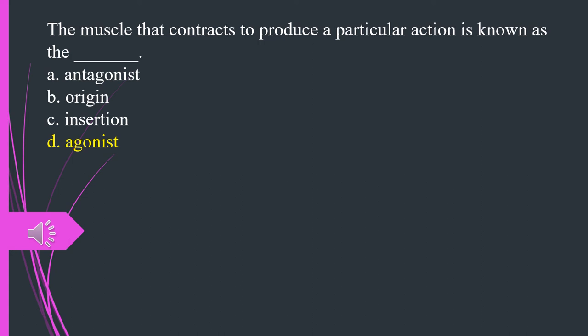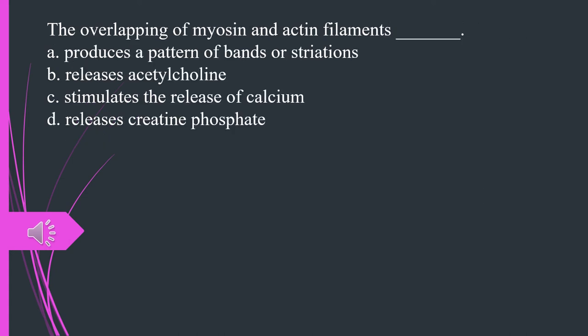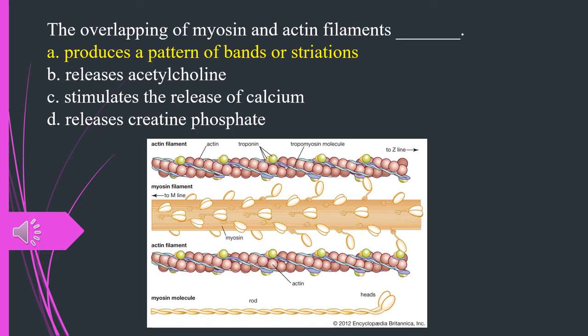The overlapping of myosin and actin filaments A. Produces a pattern of bands or striations. B. Releases acetylcholine. C. Stimulates the release of calcium. D. Releases creatine phosphate. The answer is A. Produces a pattern of bands or striations.